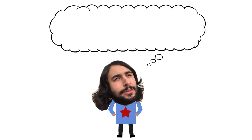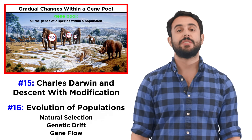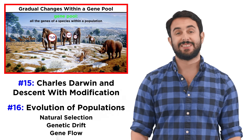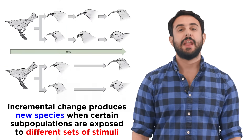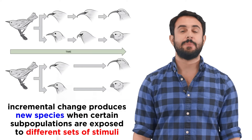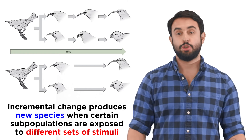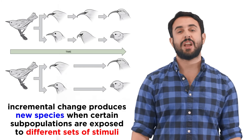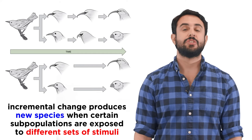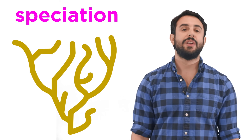Professor Dave again, let's make some new species. Earlier in the series we talked about Darwin's descent with modification, and elucidated how evolution occurs by natural selection. Inevitably, as organisms exhibit slow incremental change, members of a species will eventually find themselves in different, totally new species, as sufficient alteration has occurred due to being subjected to completely different sets of stimuli, such that they are no longer able to interbreed. When this happens, we call it speciation.